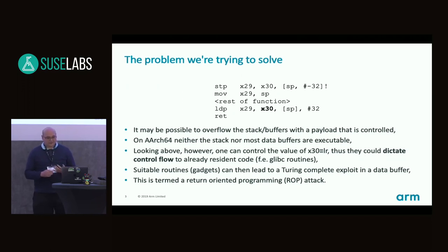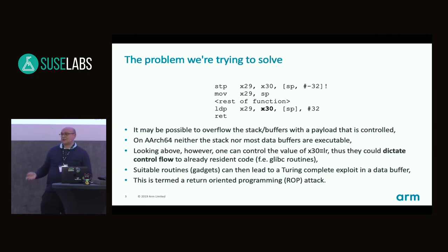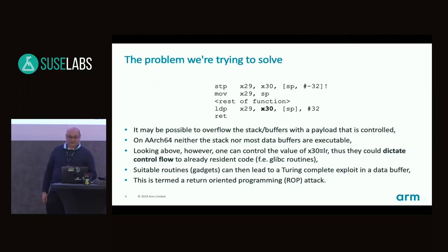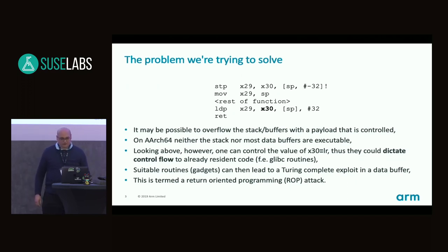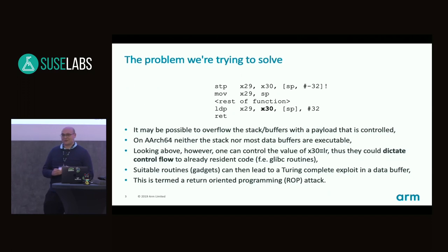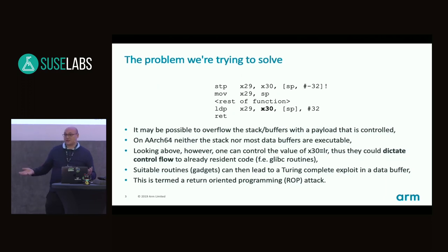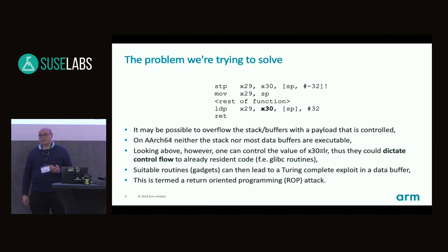Nowadays, on AArch64 at least, and presumably with the other architectures on Linux, the stack is non-executable. Most data buffers are not executable. So placing code on a stack or a data buffer is not the basis for an exploit because it will not execute - the MMU will block it. However, we can control pointers, and if we control pointers, we can make them point to other executable code that we already have - for instance, code sequences within glibc or other shared objects. So we can dictate control flow even with a non-executable stack.